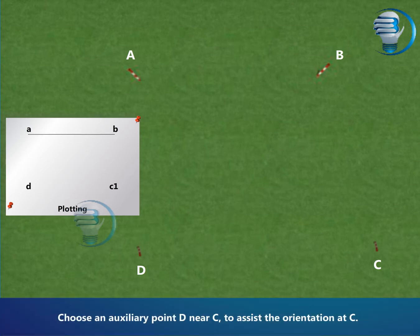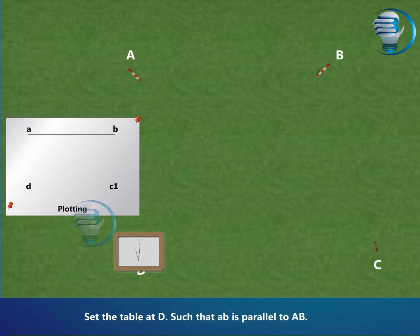Choose an auxiliary point D near C to assist the orientation at C. Set the table at D such that ab is parallel to AB.